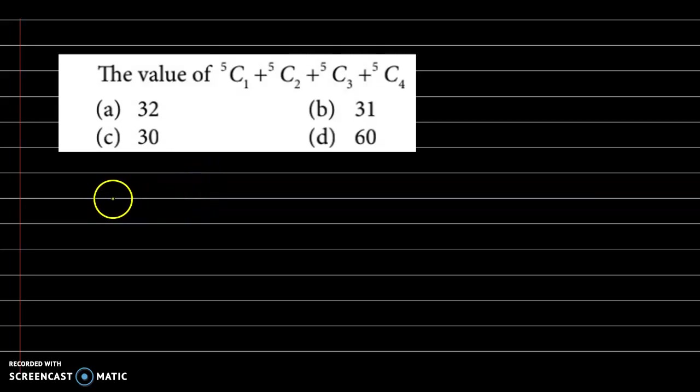Now we know this property: nC0 plus nC1 plus nC2 up to nCn equals 2 raised to n.